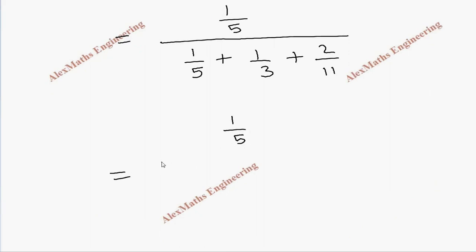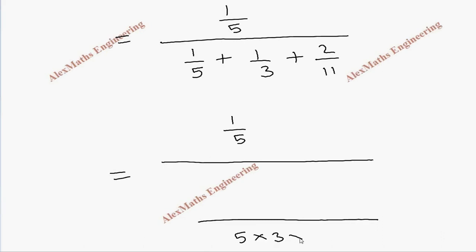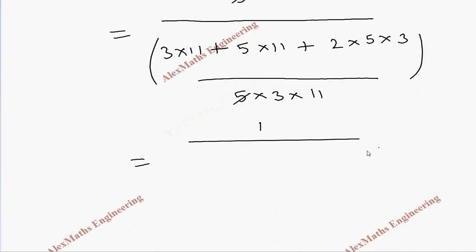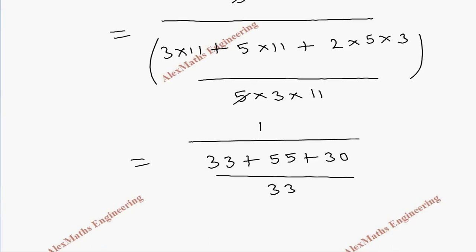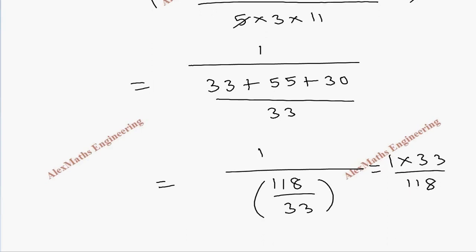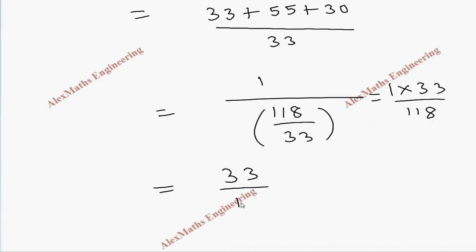Writing the numerator 1/5 as is. The LCM of 5, 3, and 11 is 165. So the denominator becomes (3×11 + 5×11 + 2×5×3)/165 = (33 + 55 + 30)/165 = 118/165. After cancelling the 5, the denominator simplifies to 118/33. Taking the reciprocal gives 33/118. So P(U1|E) = 33/118.